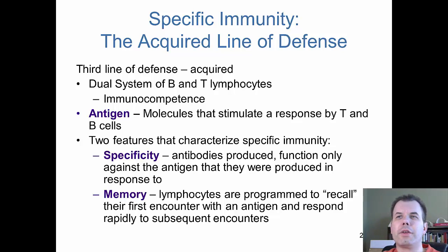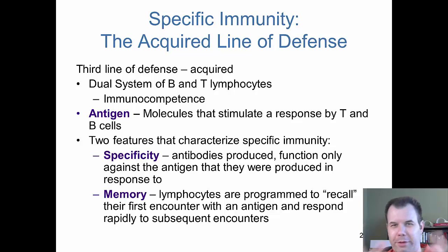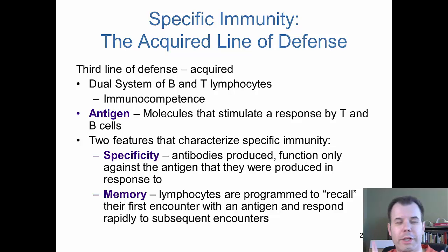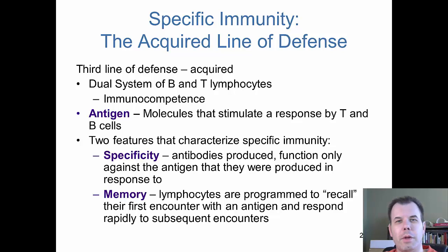An antigen is a molecule that stimulates a response by T or B cells. Pathogens have antigens and all antigens are pieces of the pathogen. The two key features remain specificity — each B and T cell is specific for each type of antigen, one receptor per antigen — and memory, because every time you're exposed to something or get a vaccine, you develop B and T cells that remember what they saw.